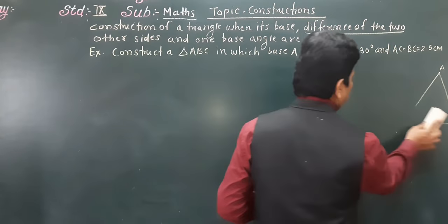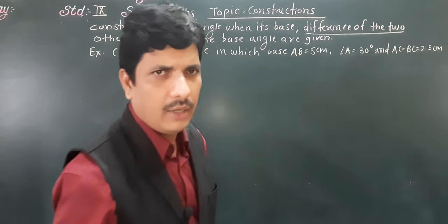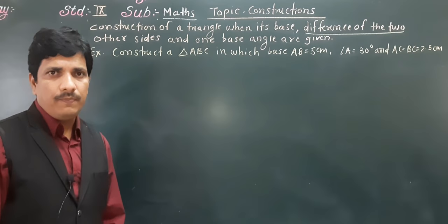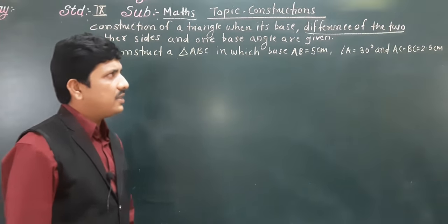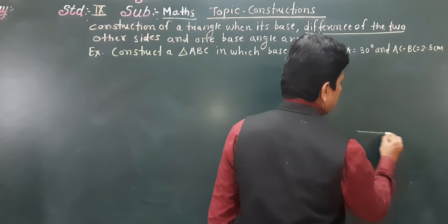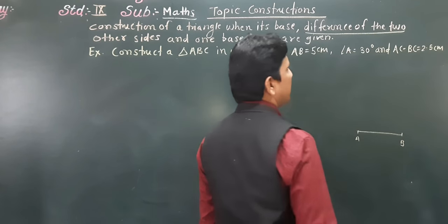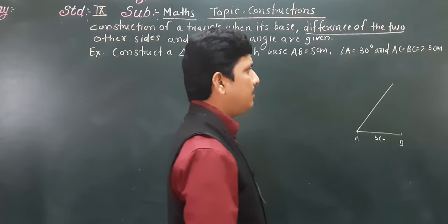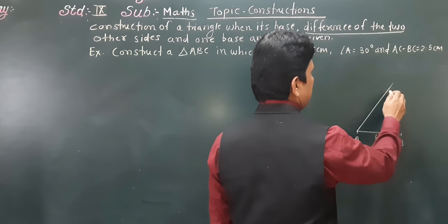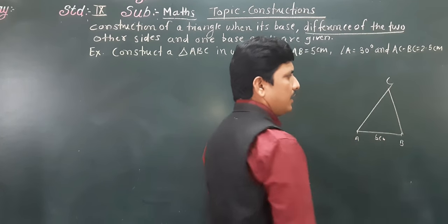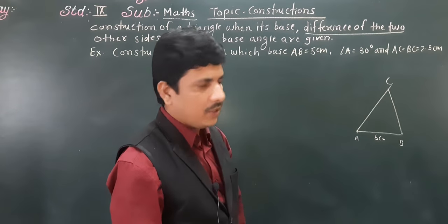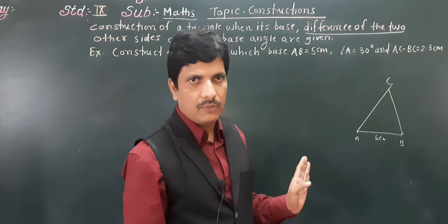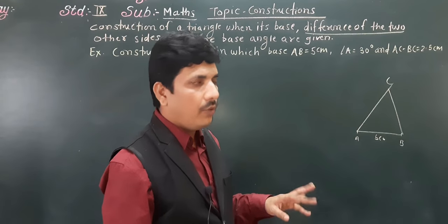Today we are going to see the first type. I have taken one example: construction of a triangle ABC in which base AB is equal to 5 centimeters, angle A is 30 degrees, and AC minus BC equals 2.5 centimeters — meaning AC is greater than BC. This is the first type of construction when the difference is given.